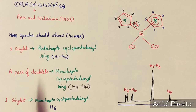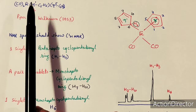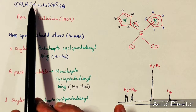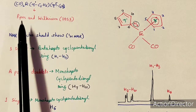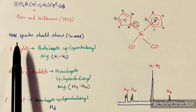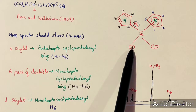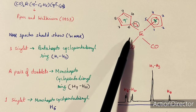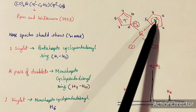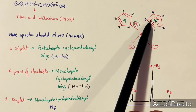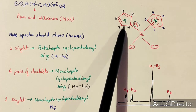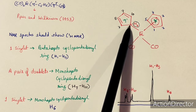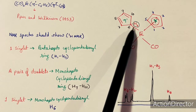We will first examine the iron complex where one cyclopentadienyl ring is η1 and the other is η5. This compound was first synthesized by Piper and Wilkinson in 1953 and is the first compound reported to show fluxional behavior. In the structure, the η5 ring has all five carbon atoms attached to the iron center, while the η1 ring has only one carbon atom attached, forming a sigma bond.